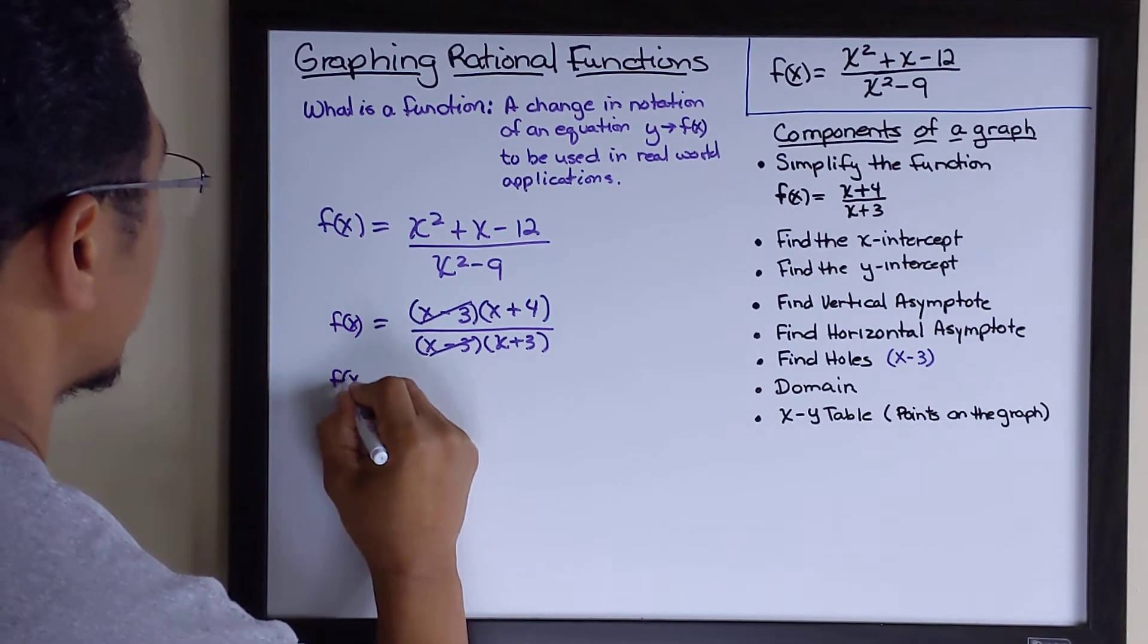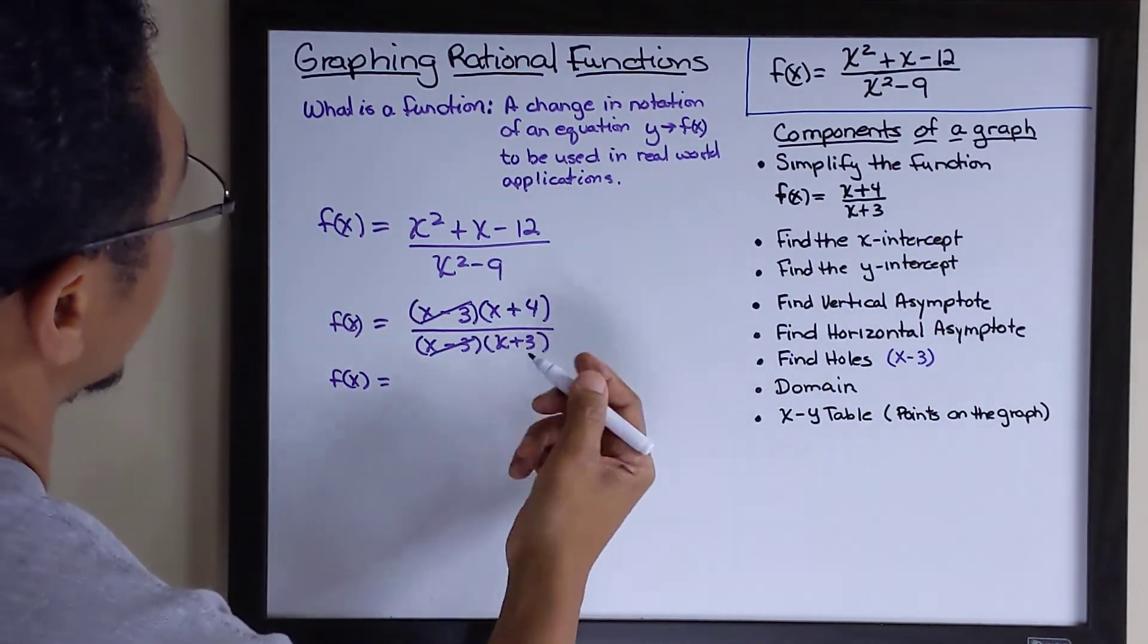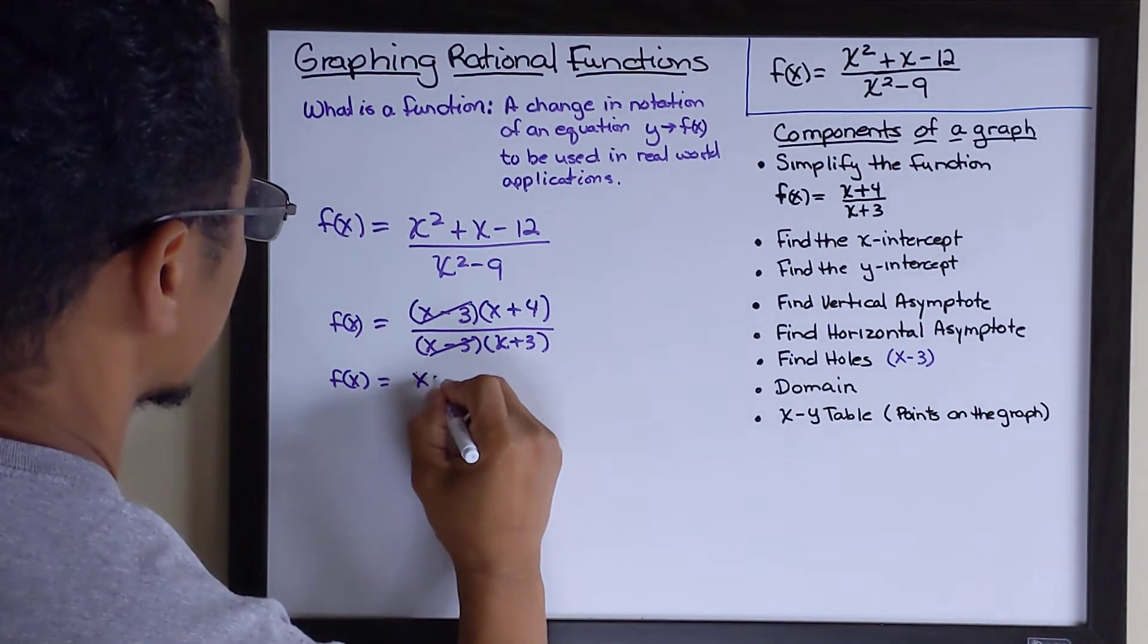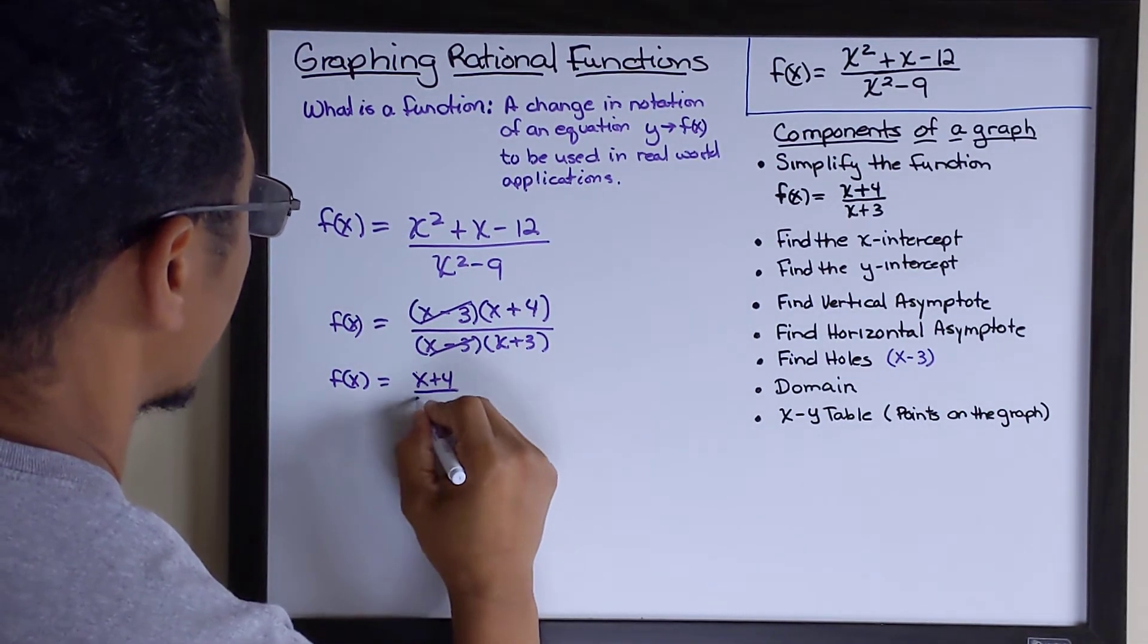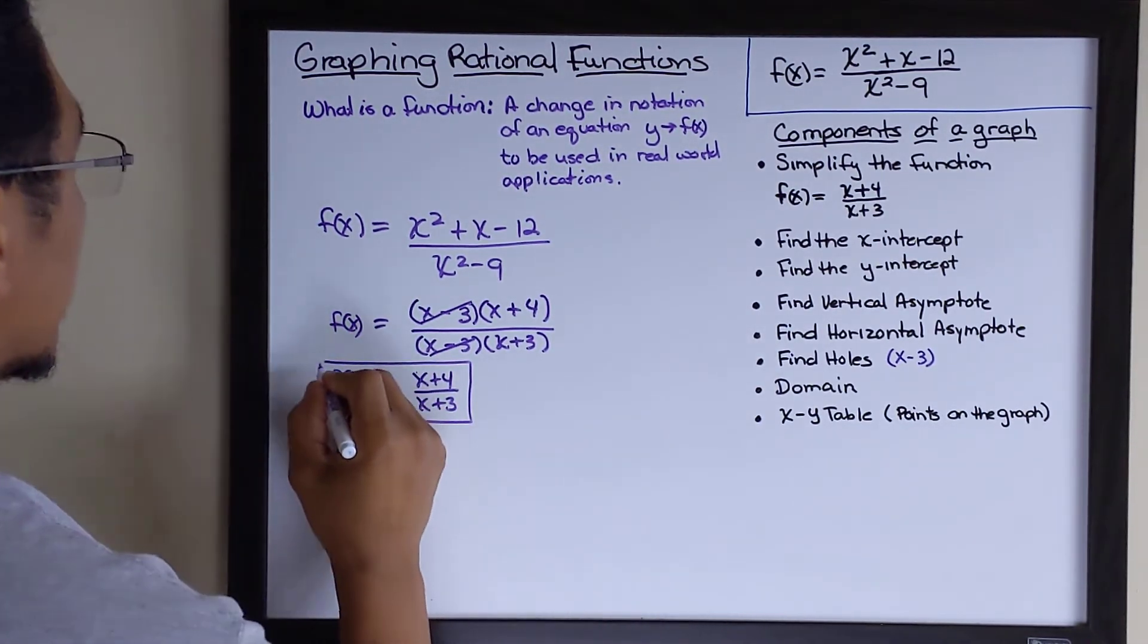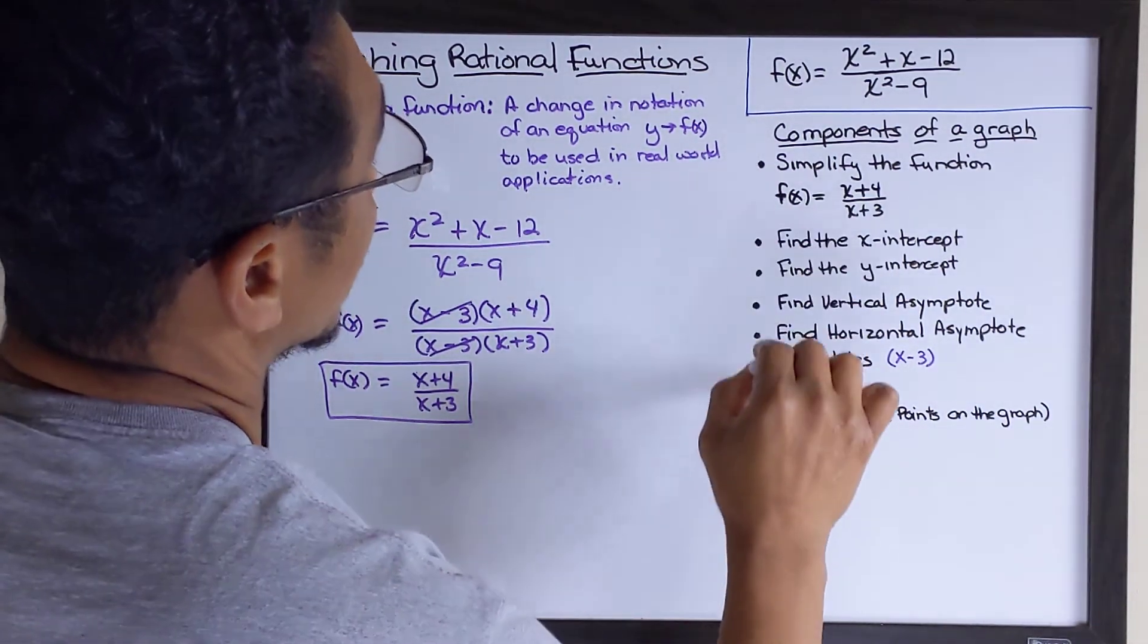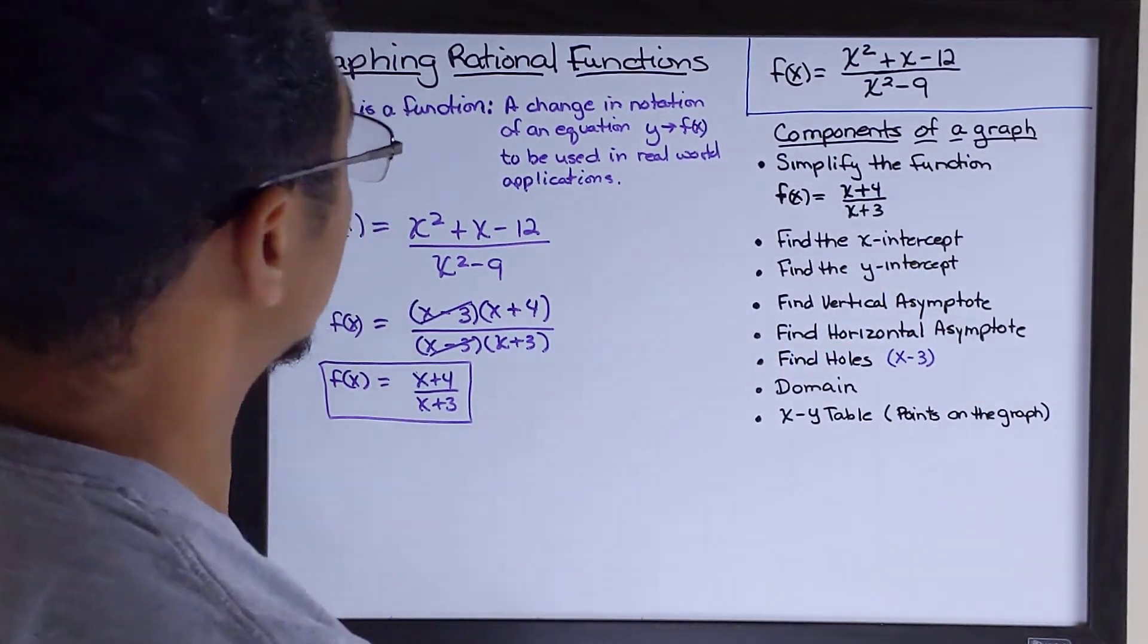So, our simplified version of this function is x plus 4 over x plus 3. Now, the reason why we do that is because it makes our calculations for finding the other components later on a little bit easier.